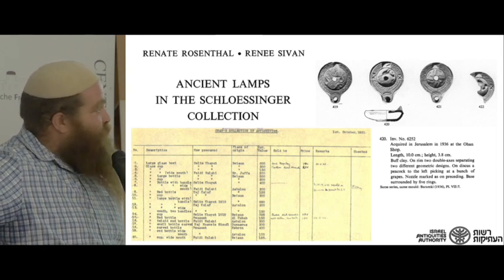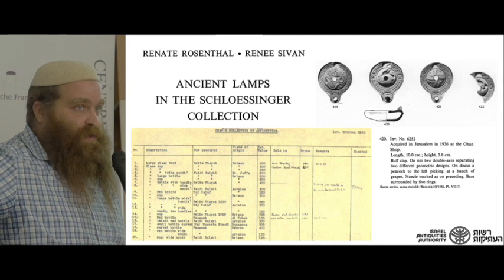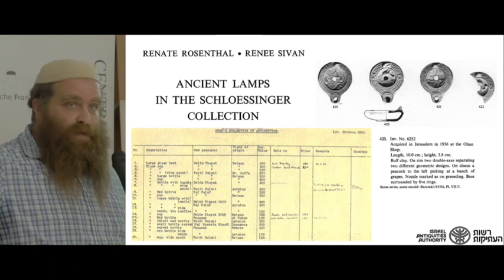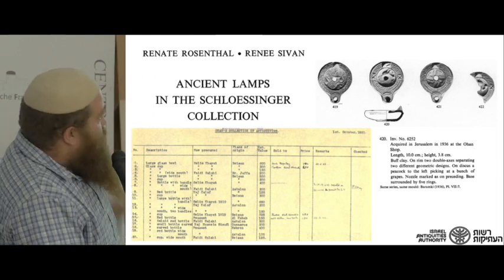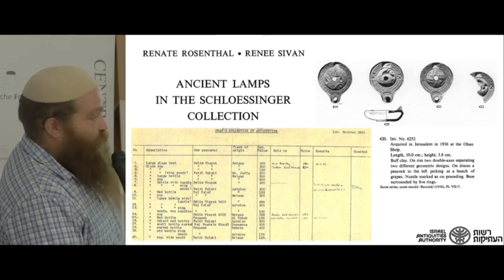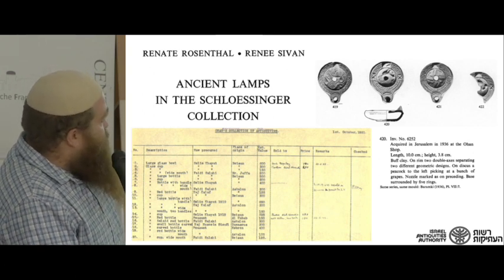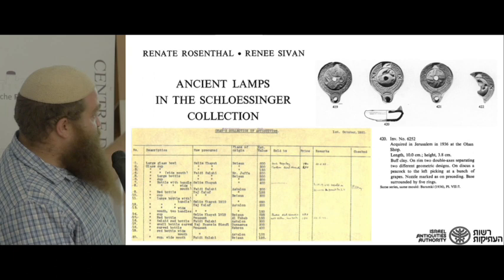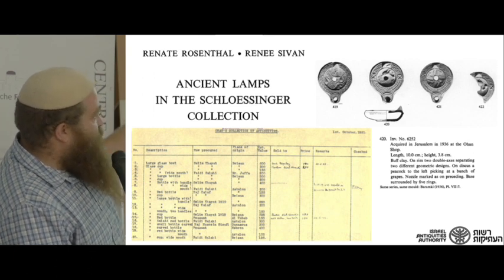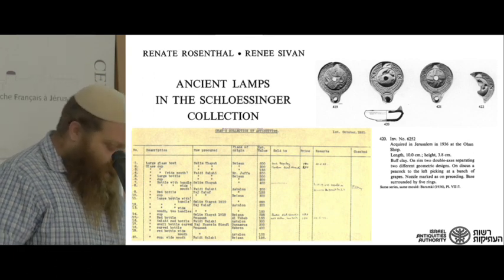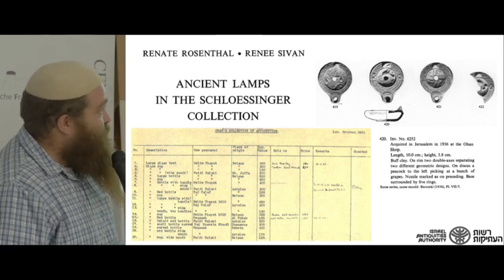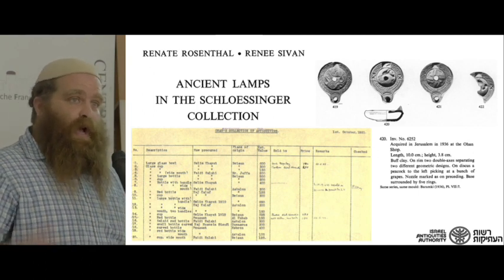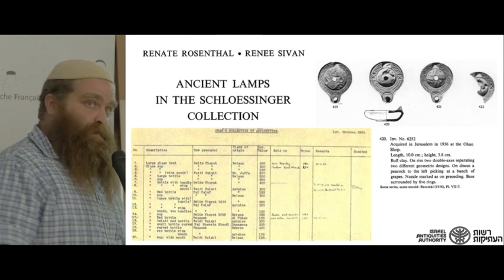Many know the Ohan shop for its dealings in the Dead Sea Scrolls. From 1931, the inventory of the Ohan shop was kept at the British Mandate — recording items bought, where they came from (names or simply 'peasant from Hebron'), what area they were from, and how much they were sold for. So apparently in 1936 at the Ohan shop, some of this material appeared — material that had never been found anywhere outside of Beit Natif, until perhaps a few months ago.